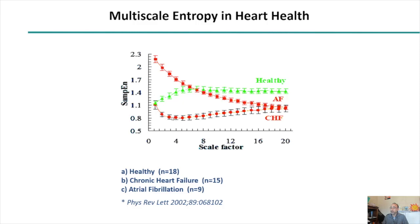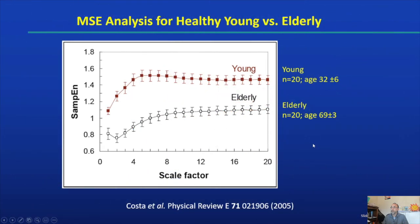For congestive heart failure, you tend to have low amounts of regularity across all temporal scales in both low and high frequencies. Healthy individuals, however, maintain a high amount of irregularity across all temporal scales. This can also be extended to differentiating between the young and elderly — young individuals have greater irregularity or sample entropy across all timescales compared to the elderly. So the sum MSE, or multiscale entropy, tends to be larger in young individuals compared to the elderly.